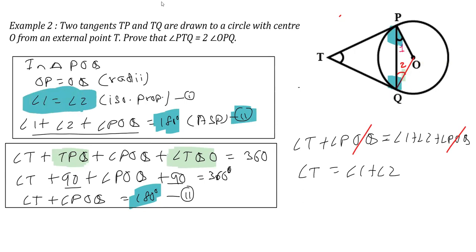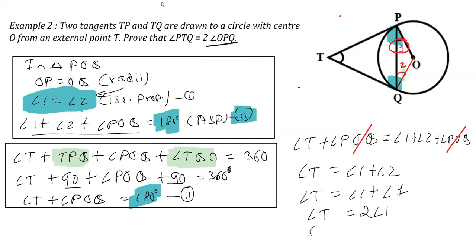Now, from the first equation we proved that angle 1 is equal to angle 2. So I can replace angle 2 with angle 1. We are looking for this angle, which is angle 1 — the angle we named angle 1. So angle T is equal to twice angle 1. Later, I can replace angle 1 with its name, that is angle OPQ. This is how this question is proved: angle PTQ equals 2 times angle OPQ.